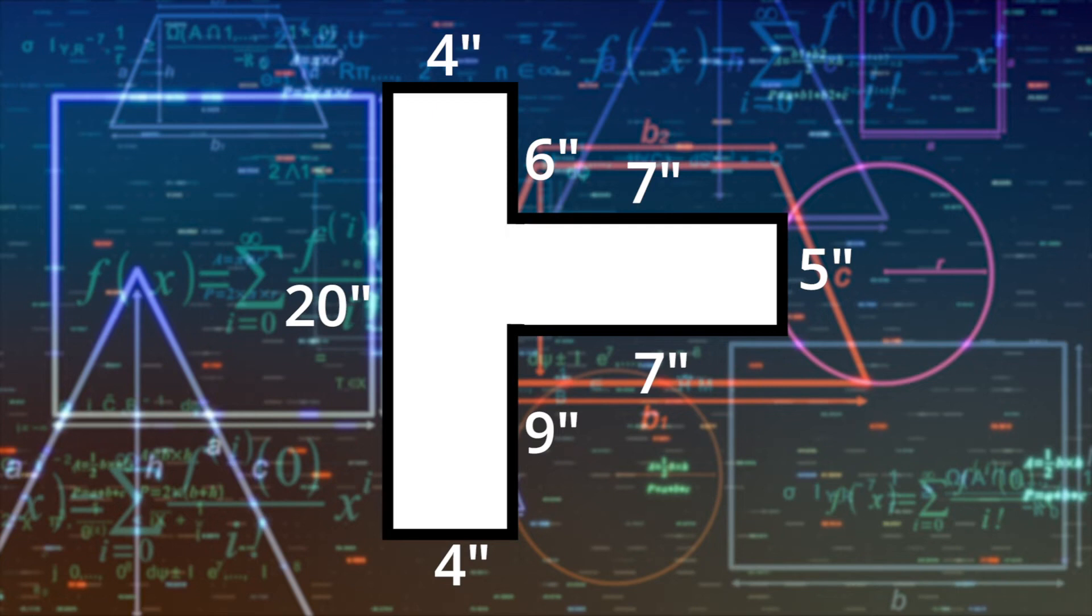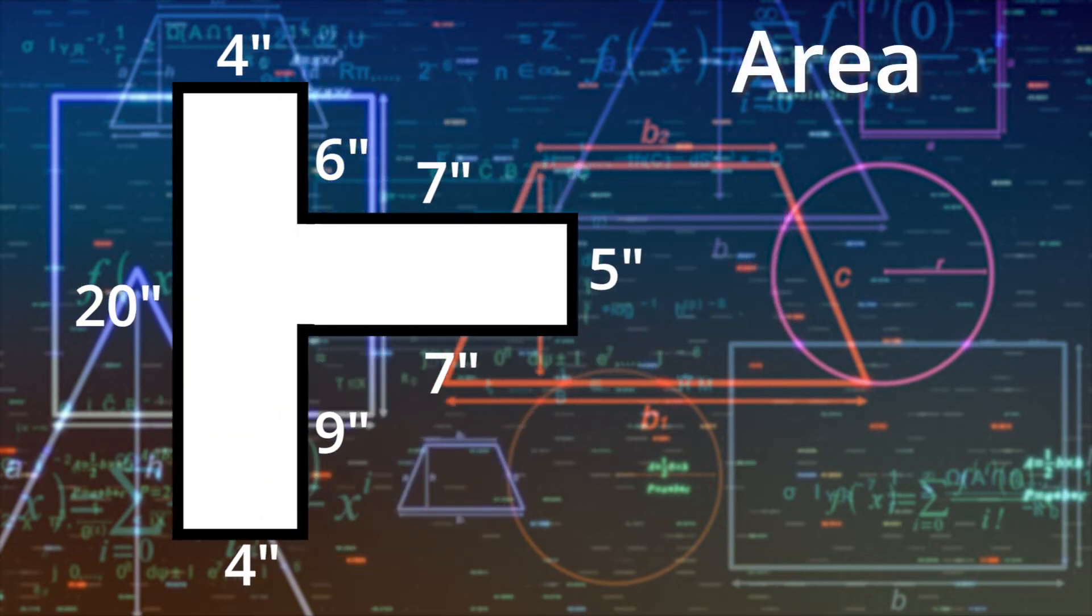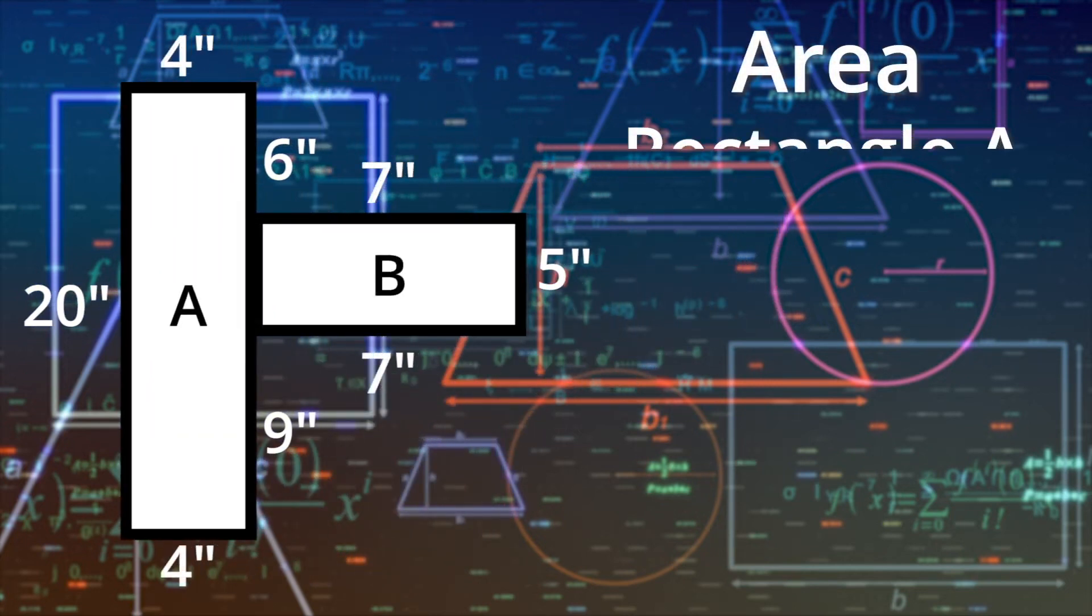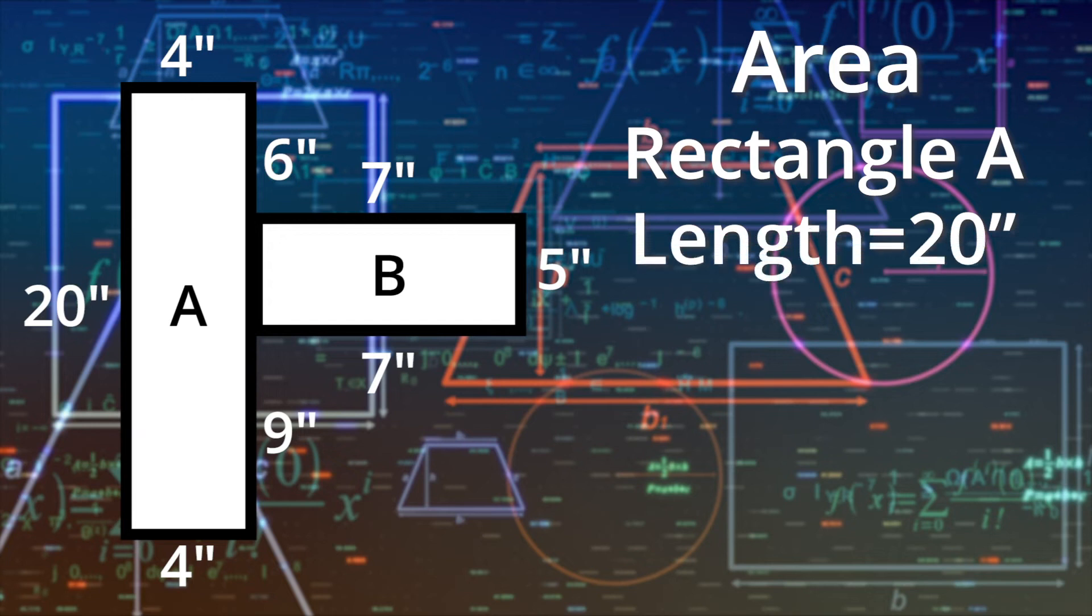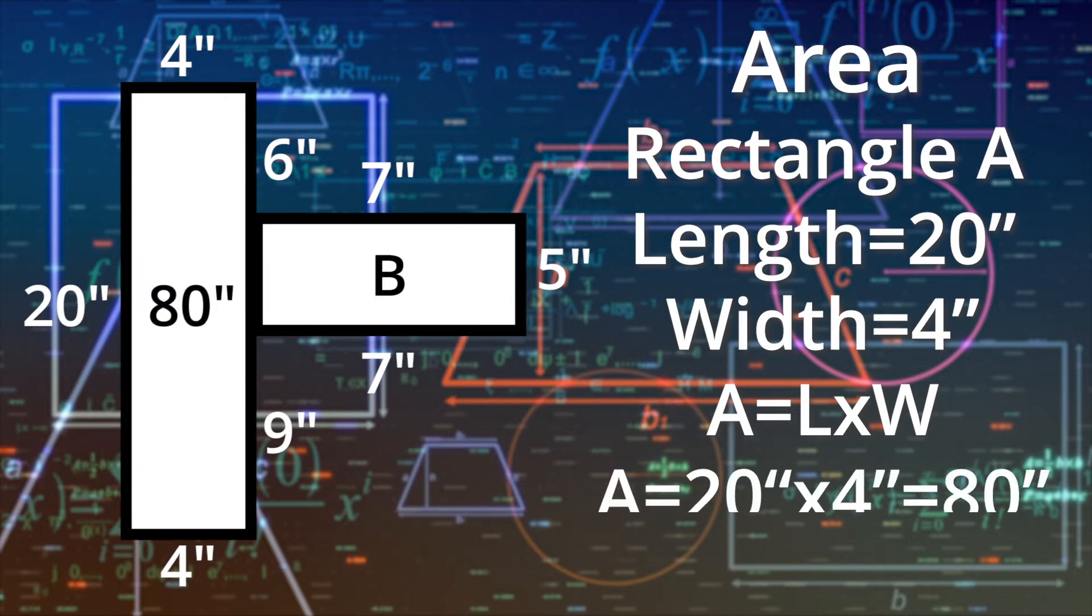Okay, now that we know the missing measurements, we can figure out the perimeter and area of the shape. Let's start with the area. We know the length of rectangle A is 20 inches, and its width is 4 inches. Since area equals length times width, the area of rectangle A is 80 square inches.